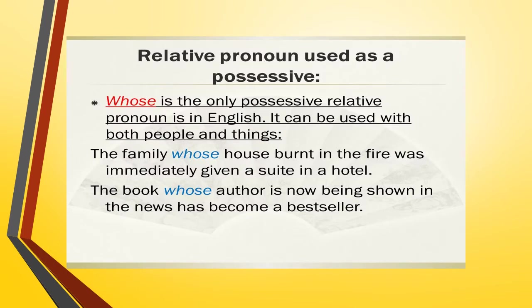Relative pronoun used as a possessive. Here is a small tip for you: the word 'whose' is the only possessive relative pronoun in English. It can be used with both people and things. 'The family whose house burnt in the fire was immediately given a suite in a hotel.' 'The book whose author is now being shown in the news has become a best seller.' So 'whose' in the first sentence refers to people and in the second sentence it refers to a thing.